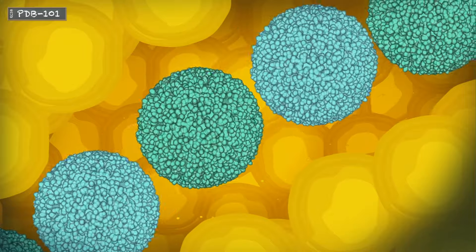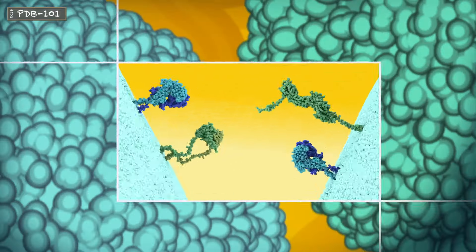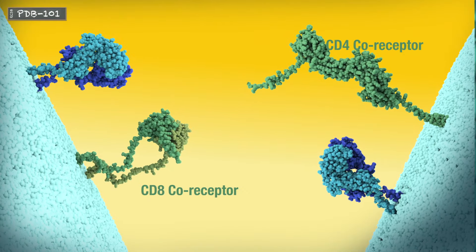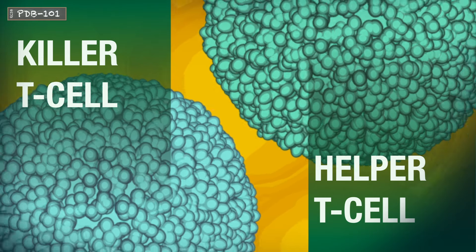T cells that survive to maturity are differentiated into two types, one bearing the CD4 co-receptor and the other bearing CD8, referred to as helper and killer T cells respectively.